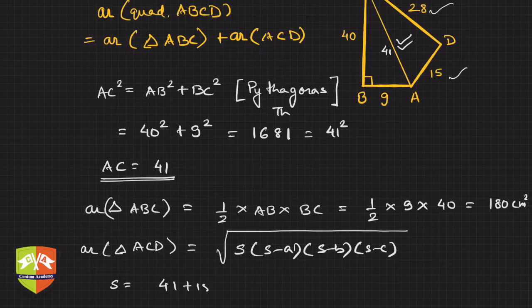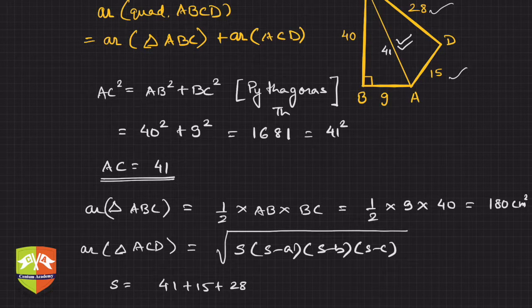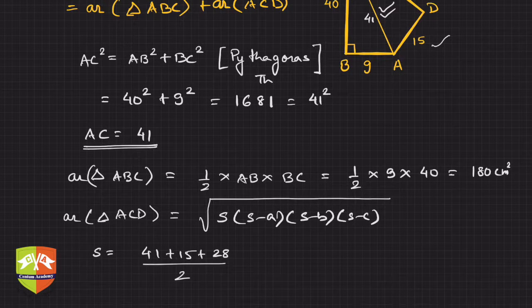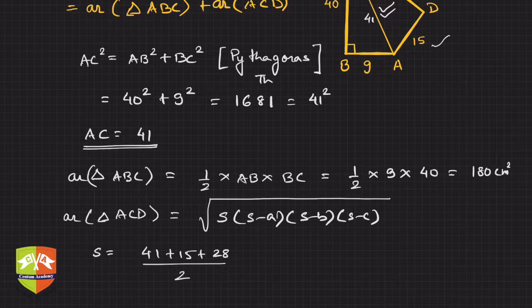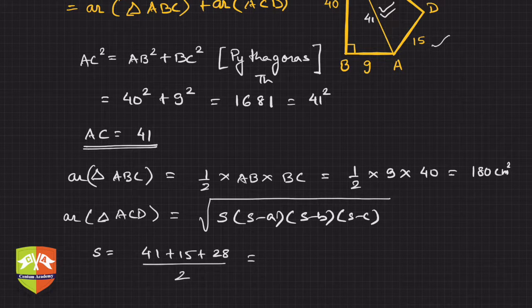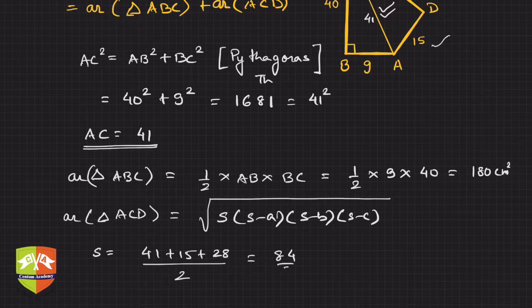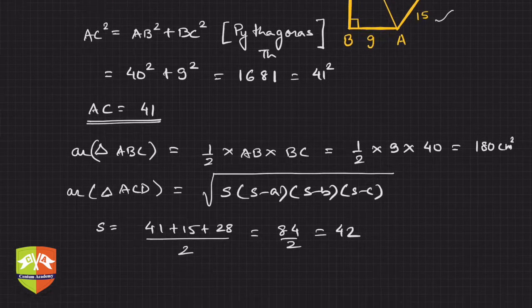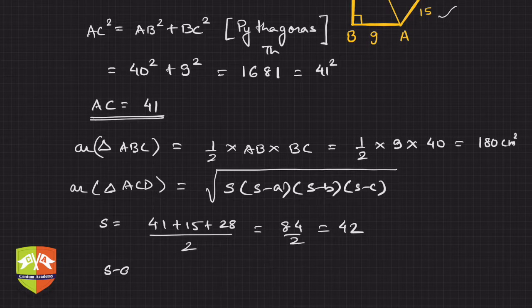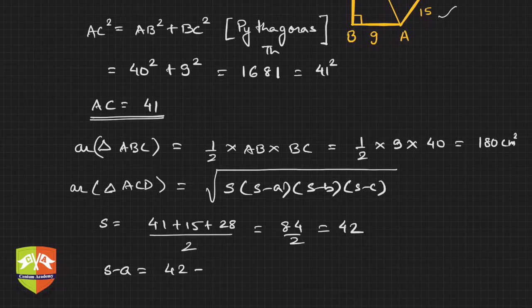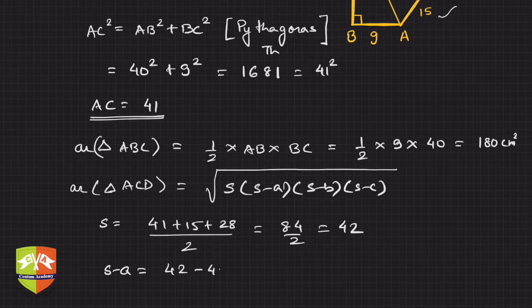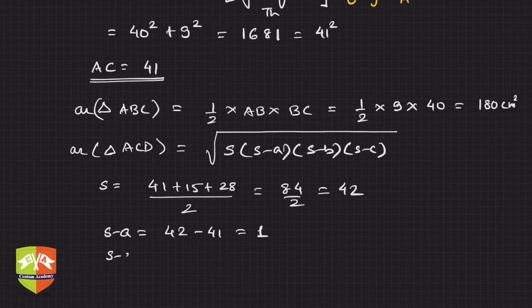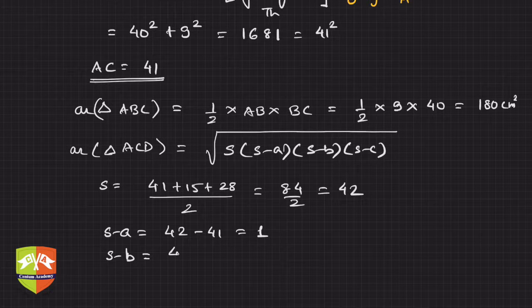We got the semi-perimeter. Now s minus a: that's 42 minus 41, which is 1, beautiful! So the load is reduced. s minus b is 42 minus 15, which is 27.